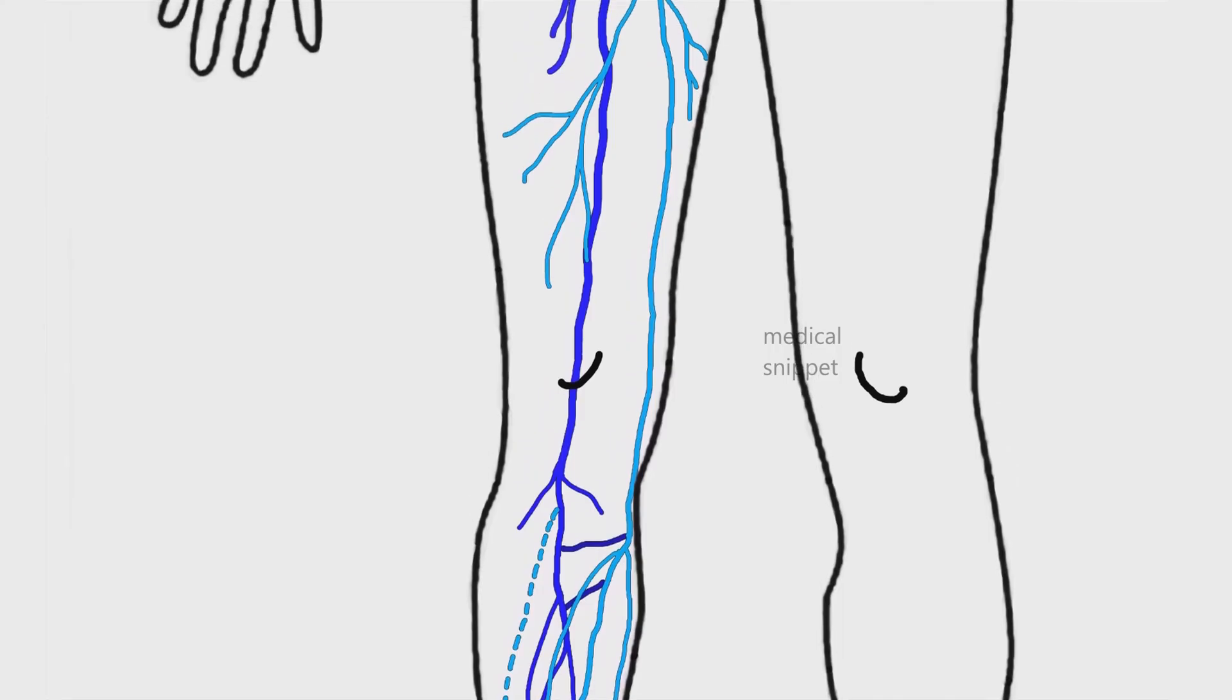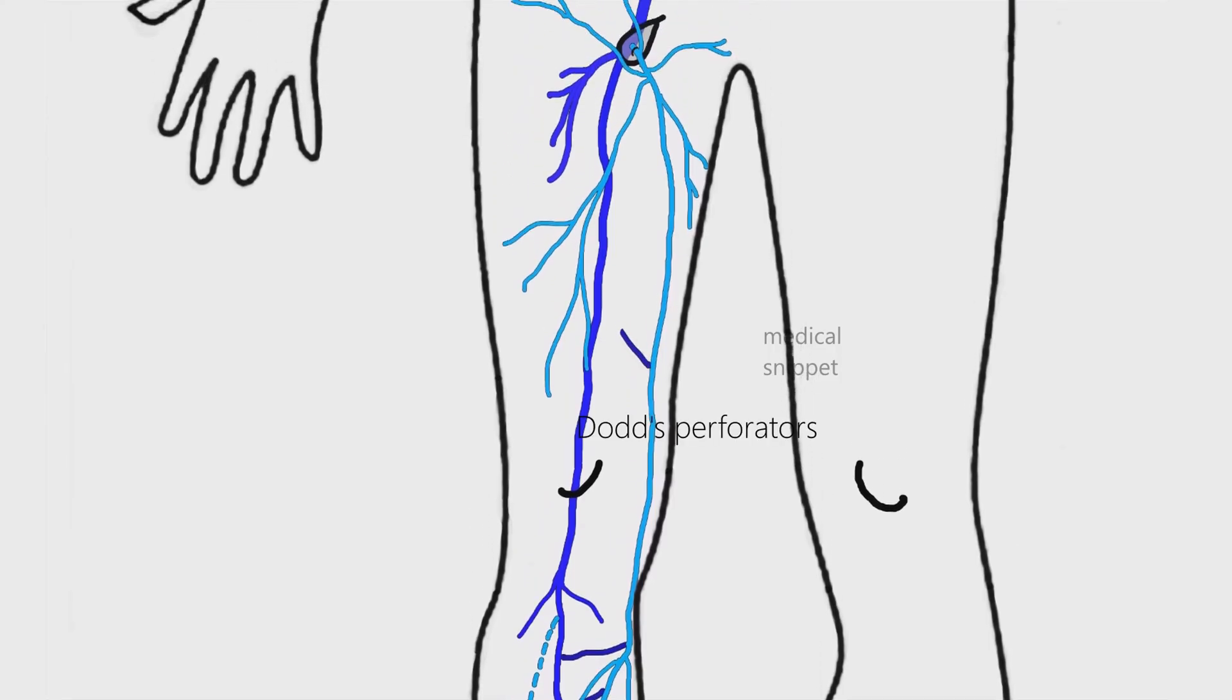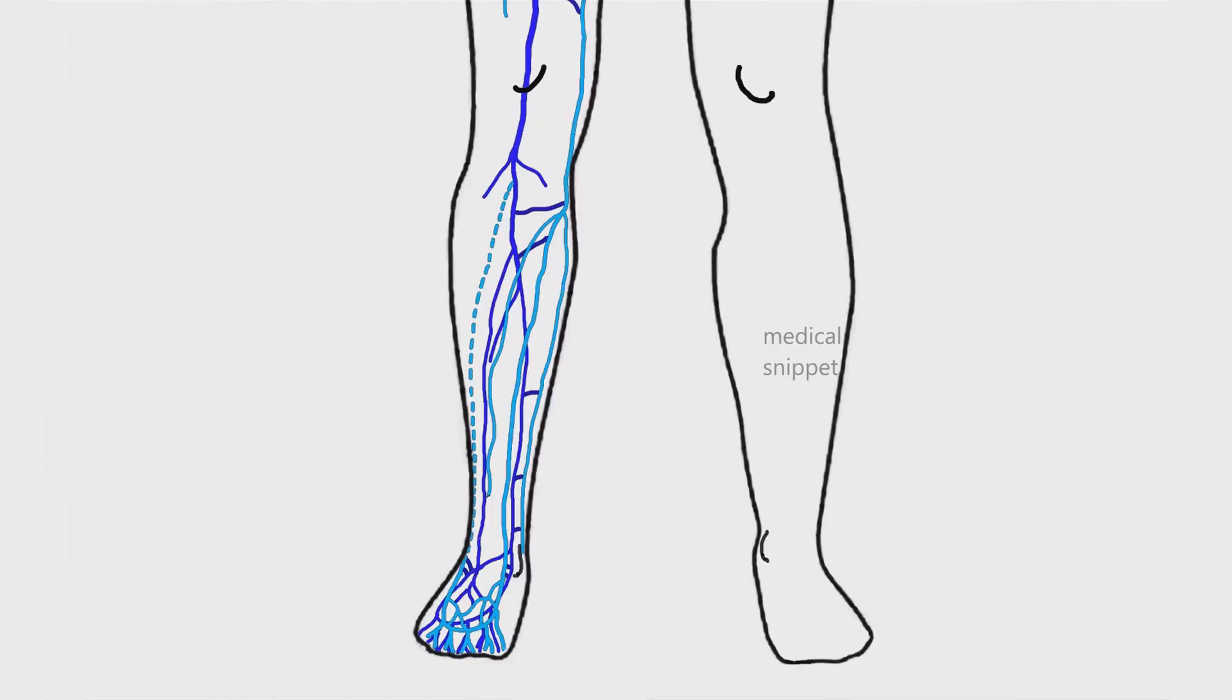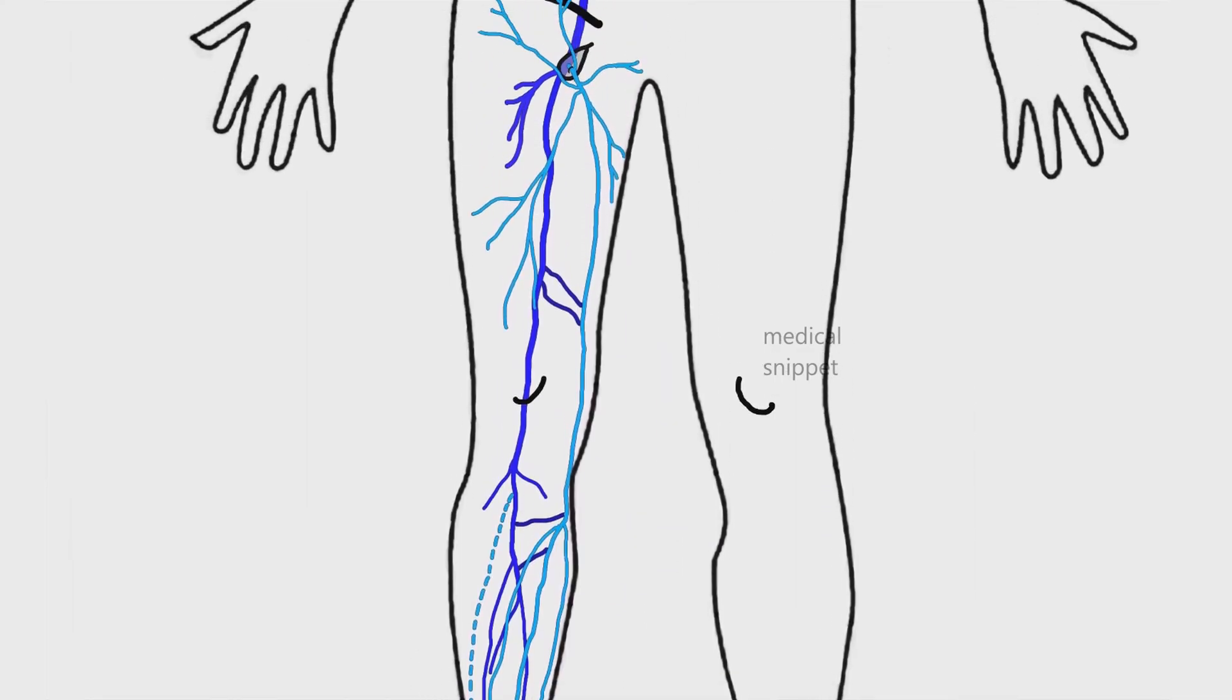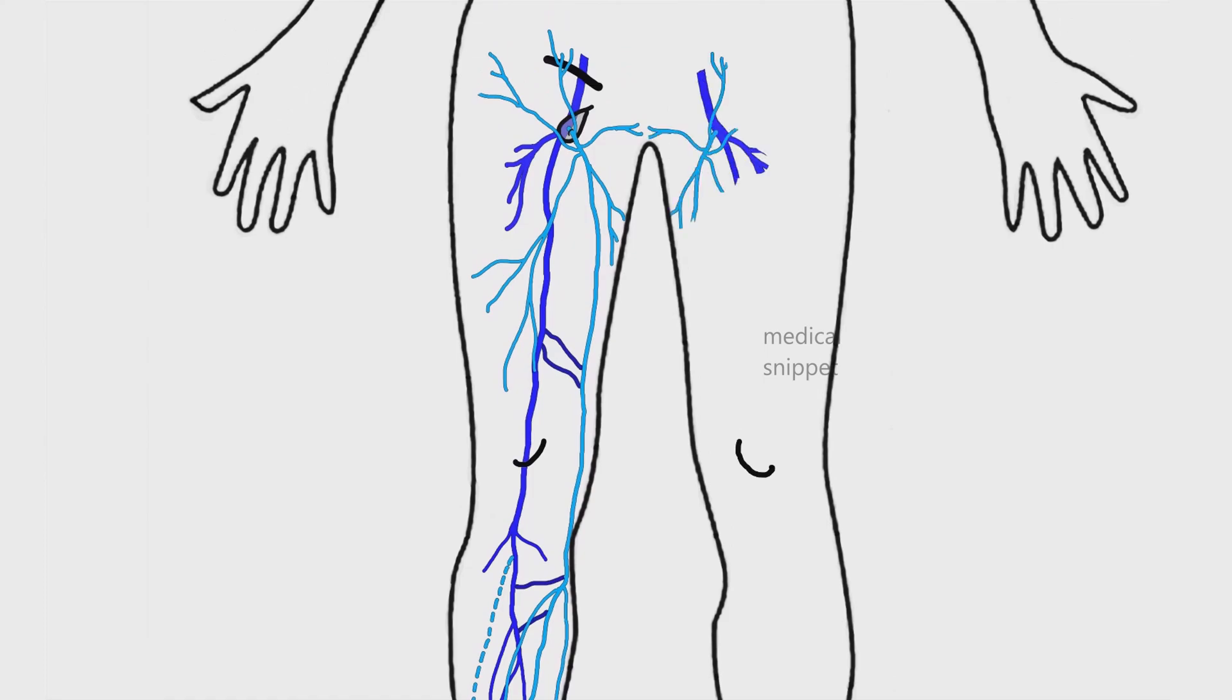In the thigh, the clinically important direct perforators are Dodd's perforators. These connect the greater saphenous vein to the femoral veins. This completes the lower limb venous system.